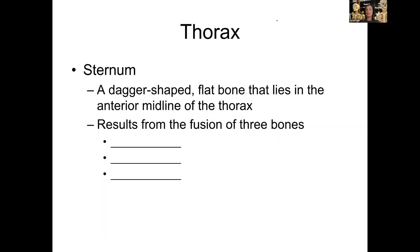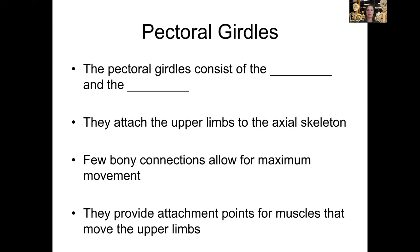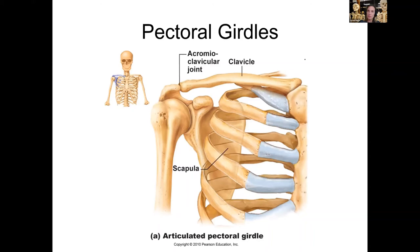The sternum is a dagger-shaped bone in the front with three parts: the manubrium at the top, the body in the middle, and the xiphoid process — a small dagger-shaped projection — at the bottom.